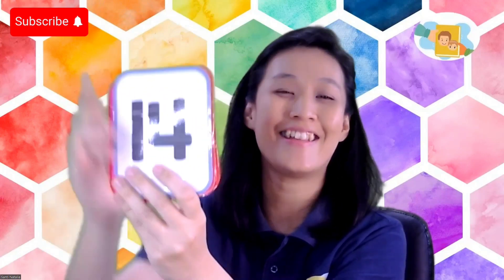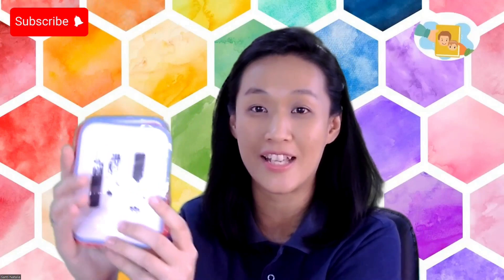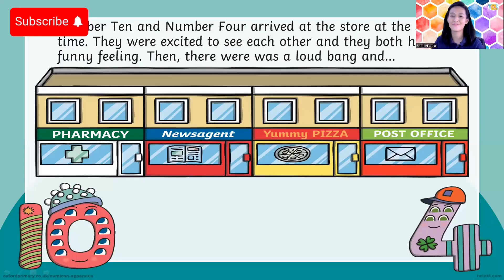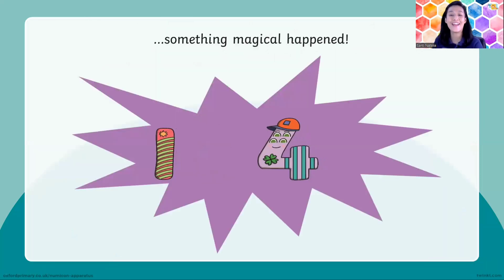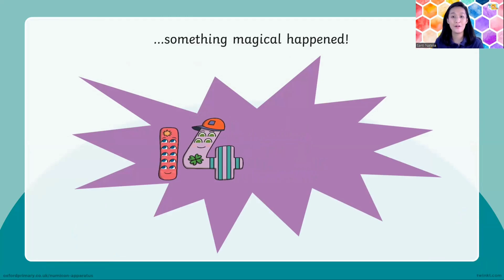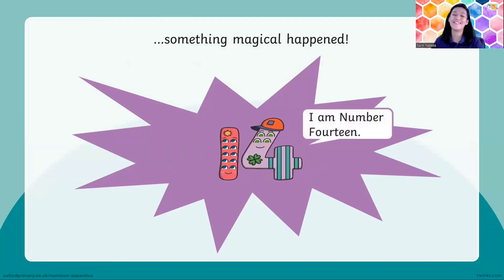Fourteen, yes, this is number 14. Now look at these children. I have number 10 and this is number 4. Number 10 and number 4 arrive at the store at the same time, and they were excited to see each other. They both had a funny feeling, then there was a loud bang and boom.